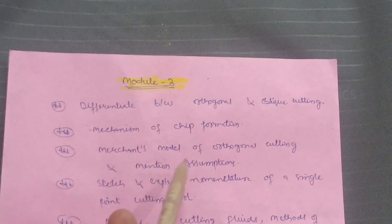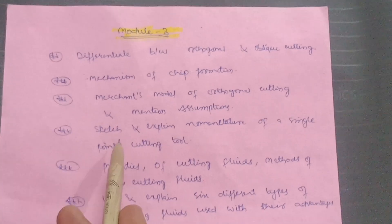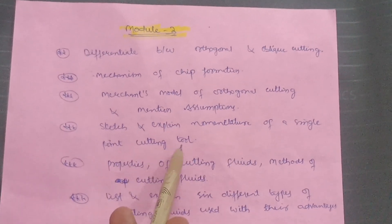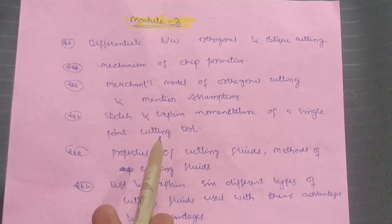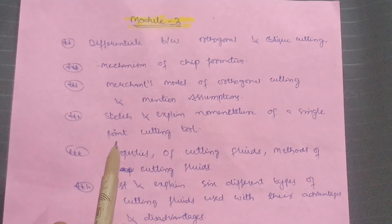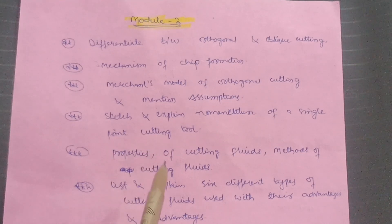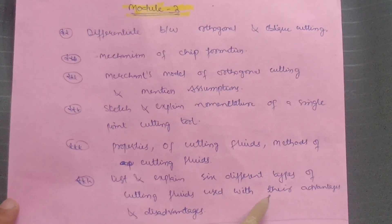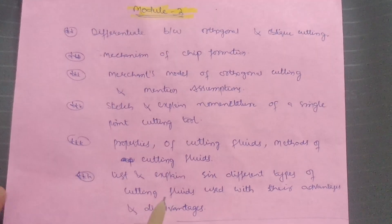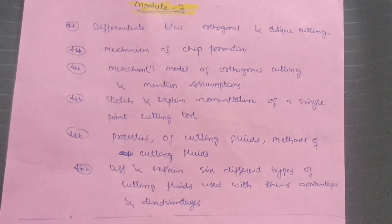Sketch and explain the nomenclature of a single point cutting tool — this is a very important one, so focus on the diagrammatic part, as this is a diagrammatic subject. Also list and explain six different types of cutting fluids used, along with their advantages and disadvantages. This is Module 2 content, and it will definitely help you conquer 15 marks.